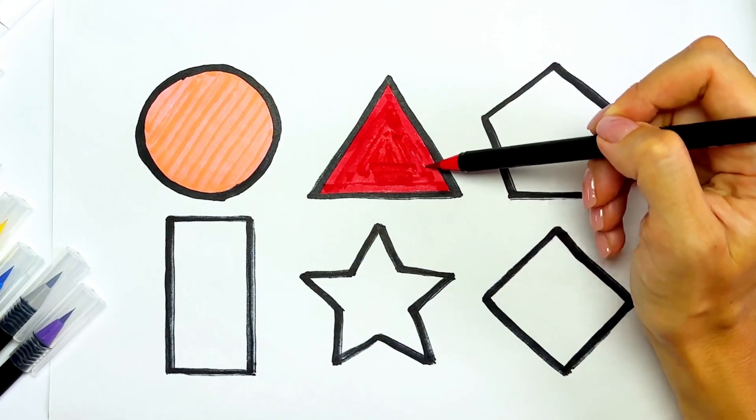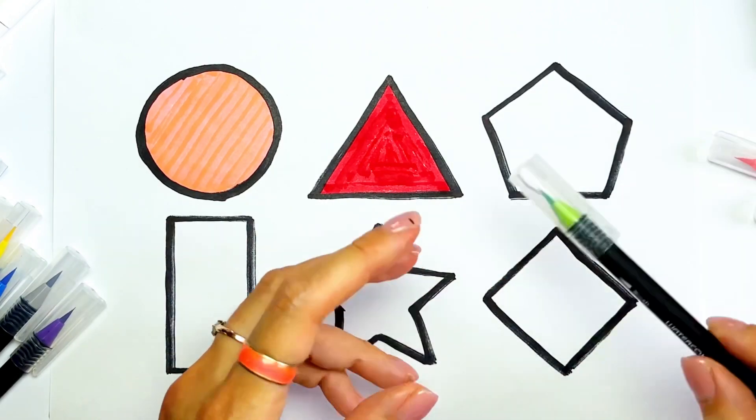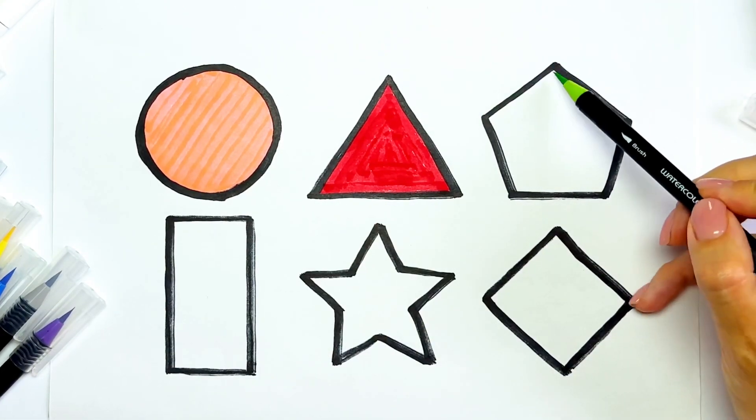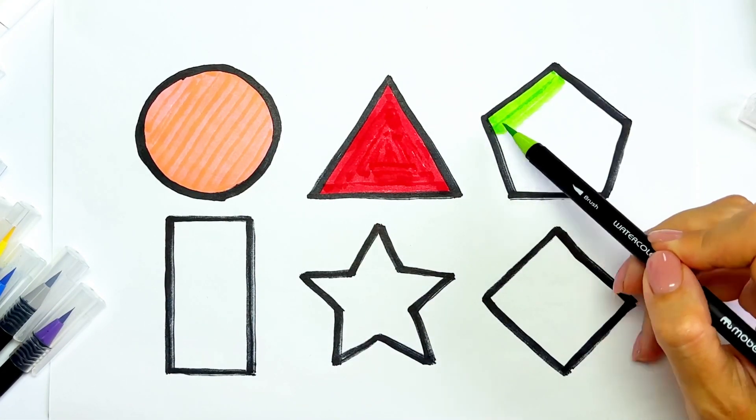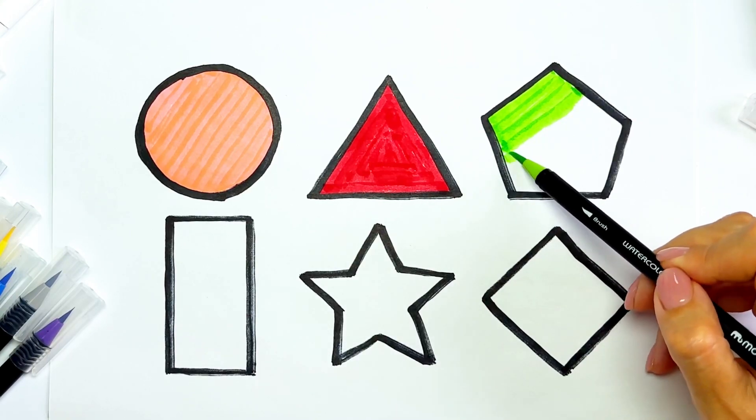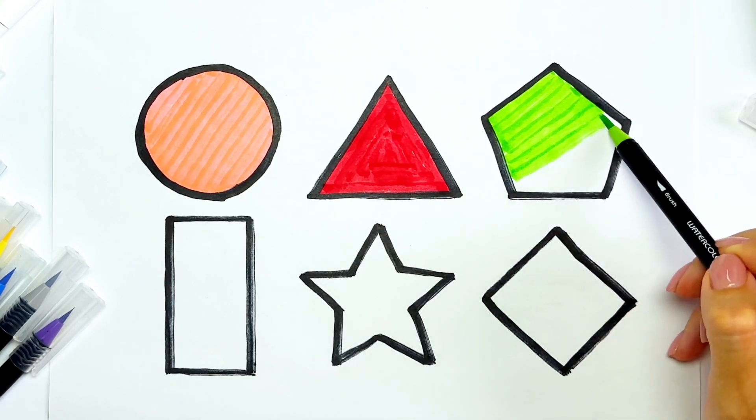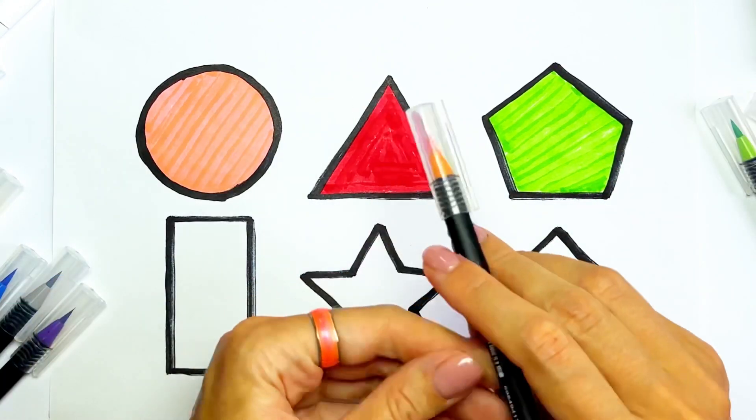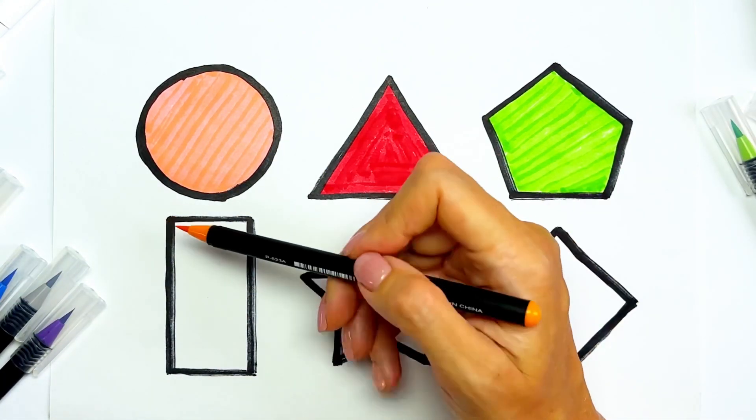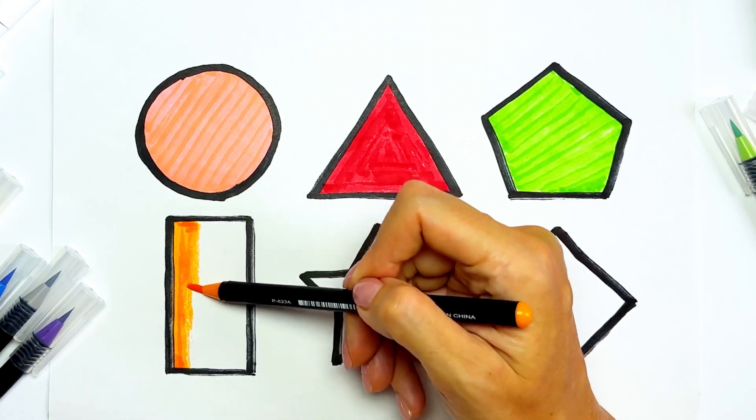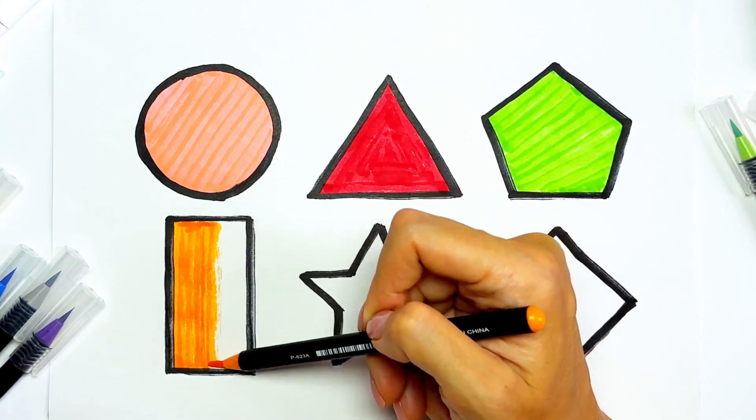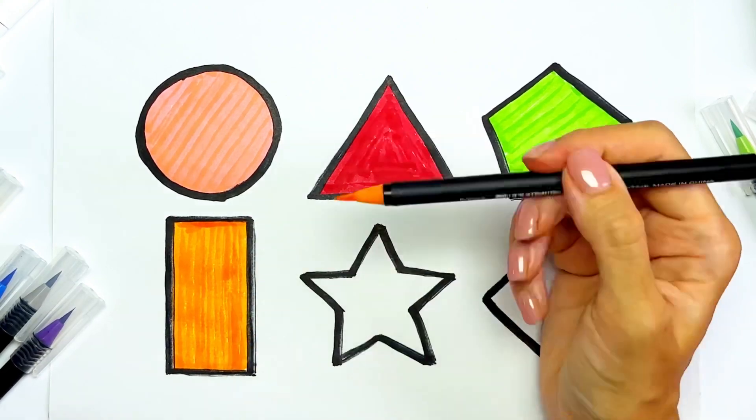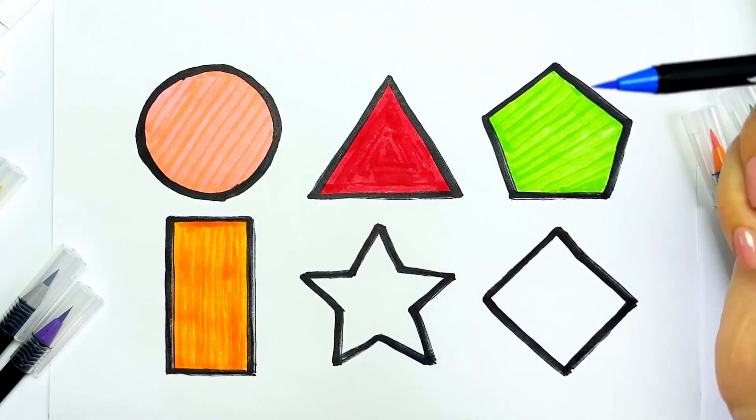Red triangle. Light green color for pentagon. Orange color for rectangle. Blue color for star.